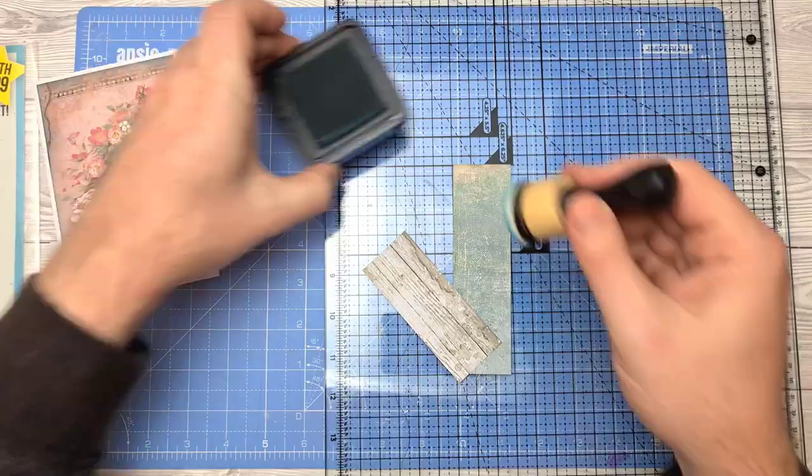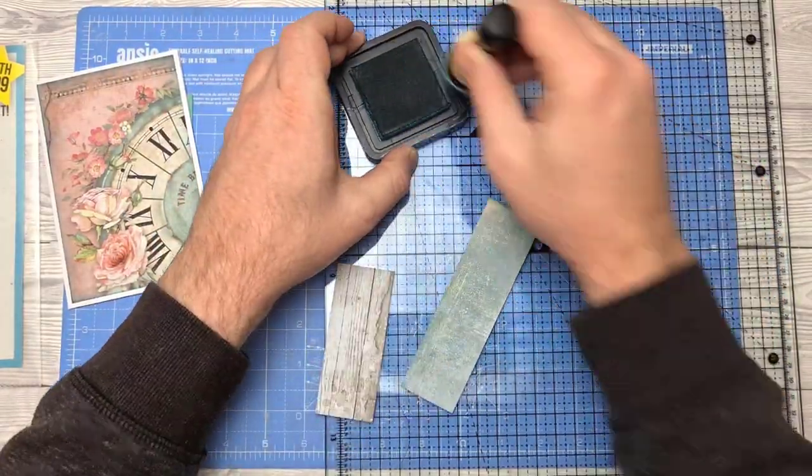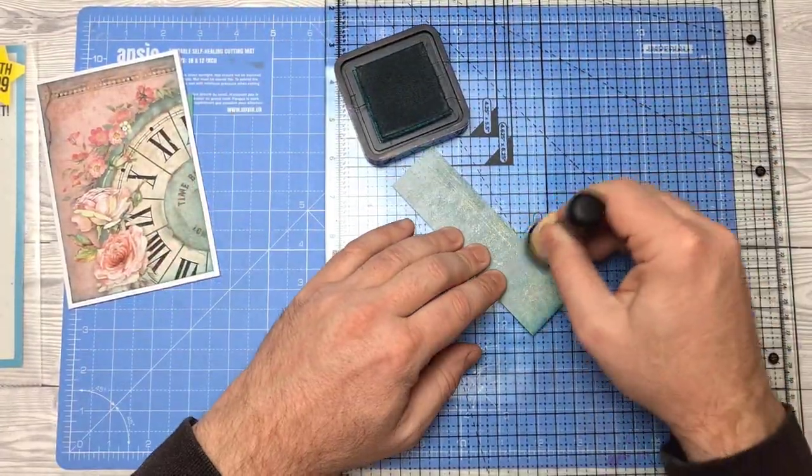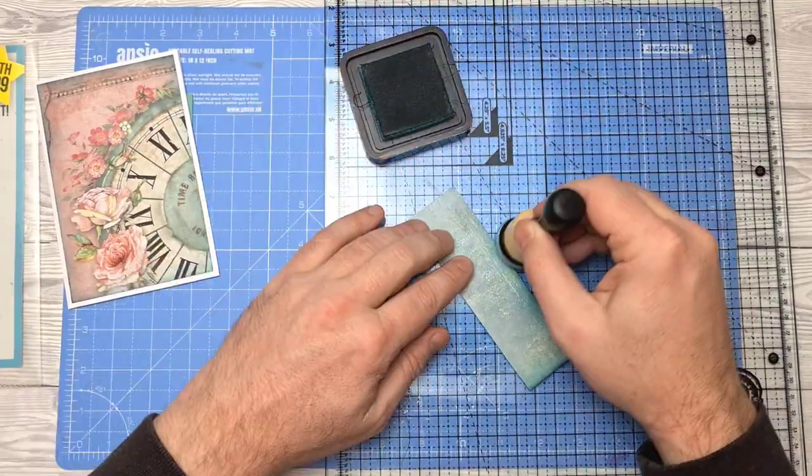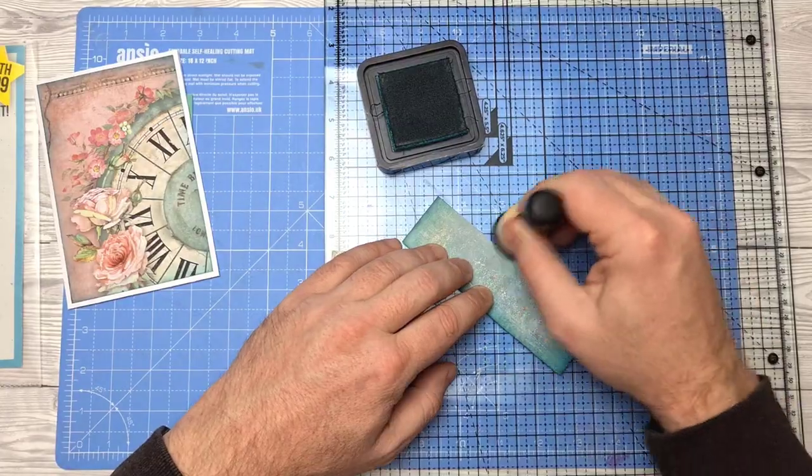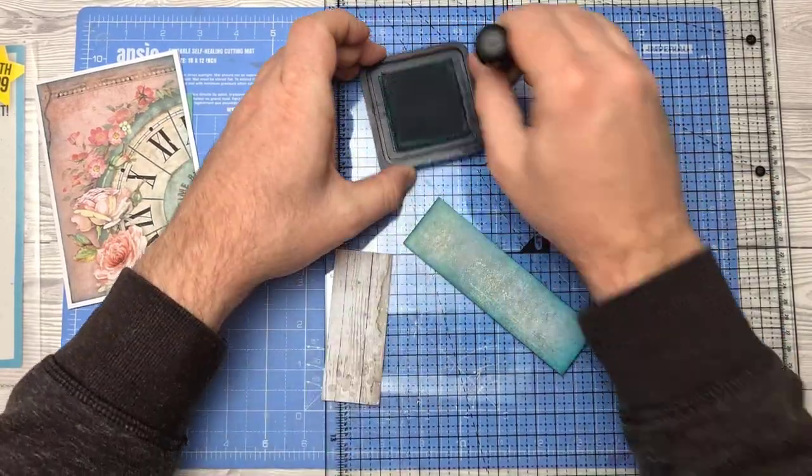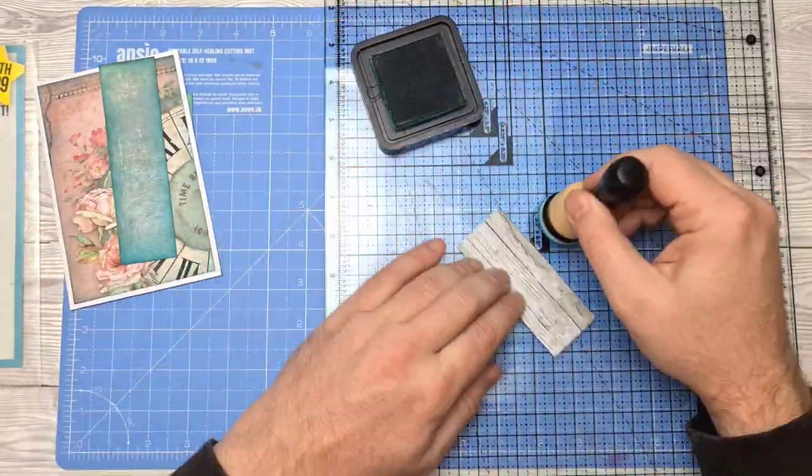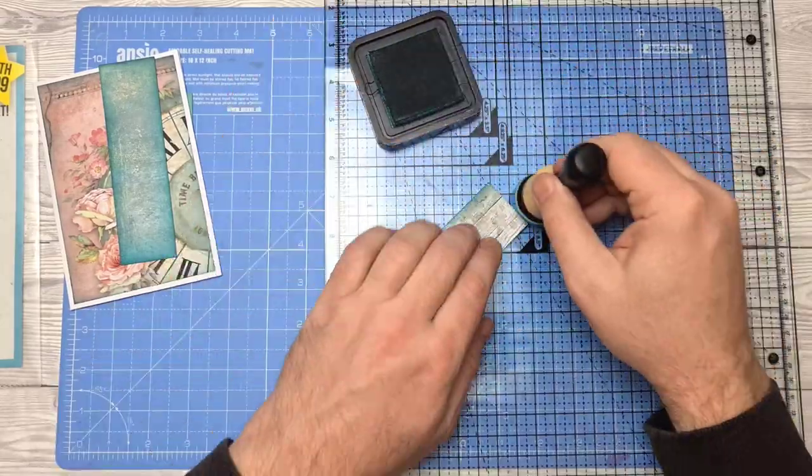I'm going to use the same ink, the Peacock Feathers Distress Ink to give a little shading to the edges of those strips as well. It can take away the whiteness of the edge and also really just gives it a bit of extra tone and dimension. In my opinion. You don't have to do this. You can do whatever you want.